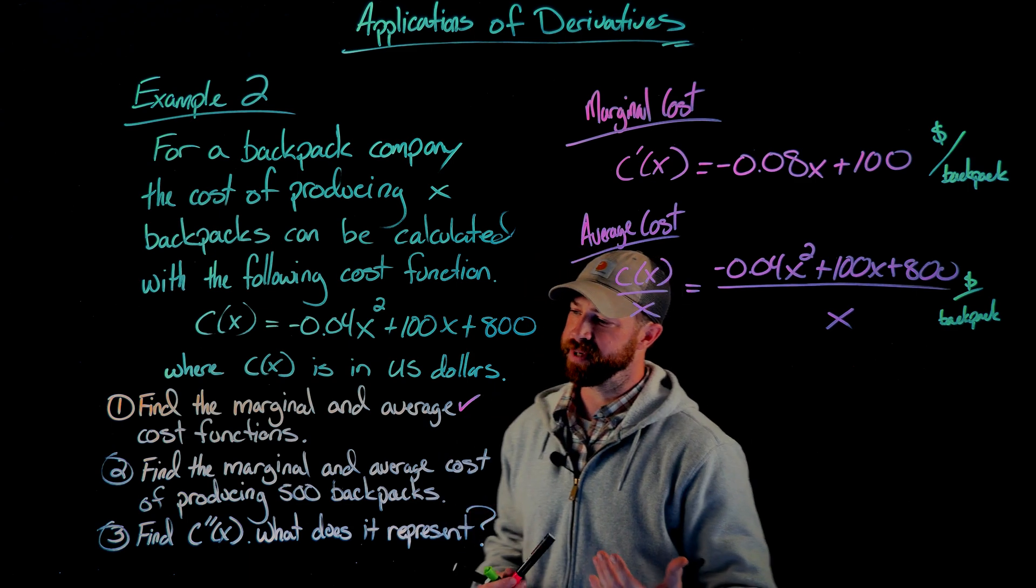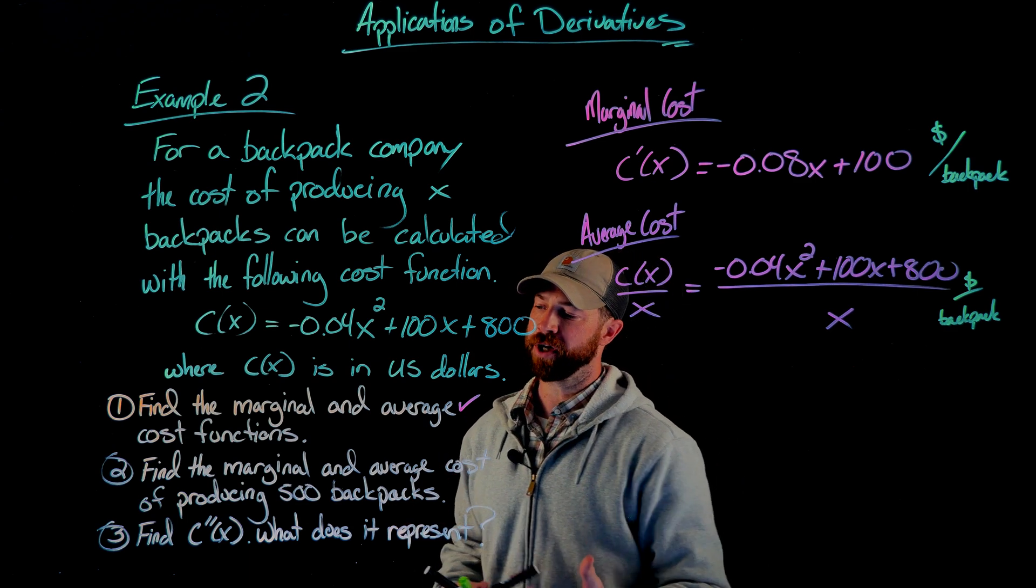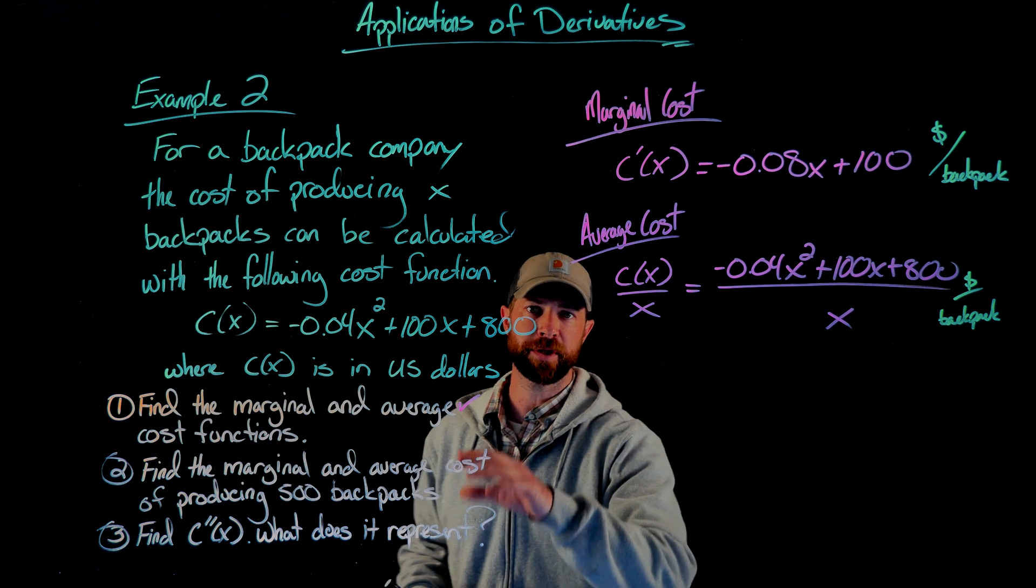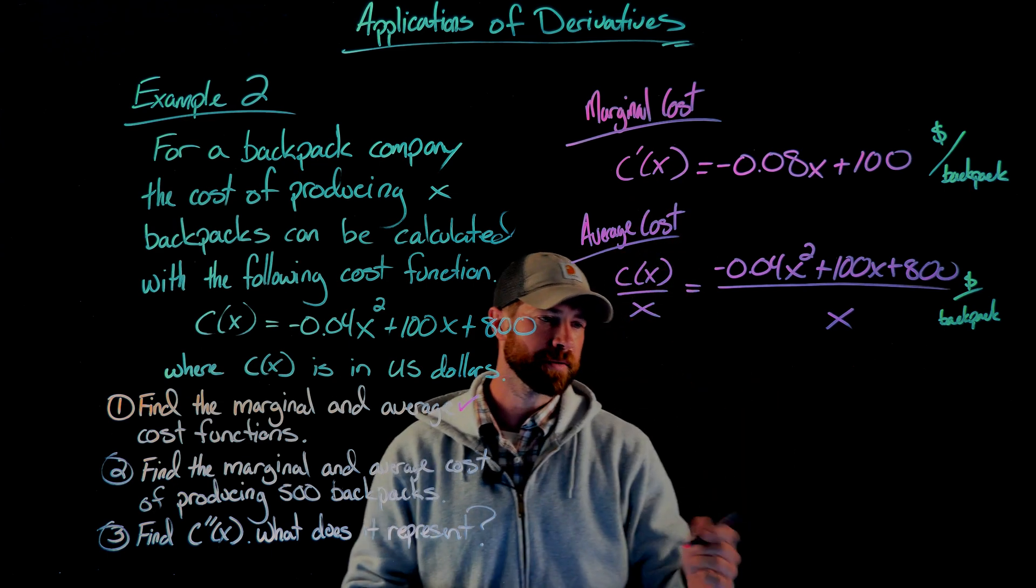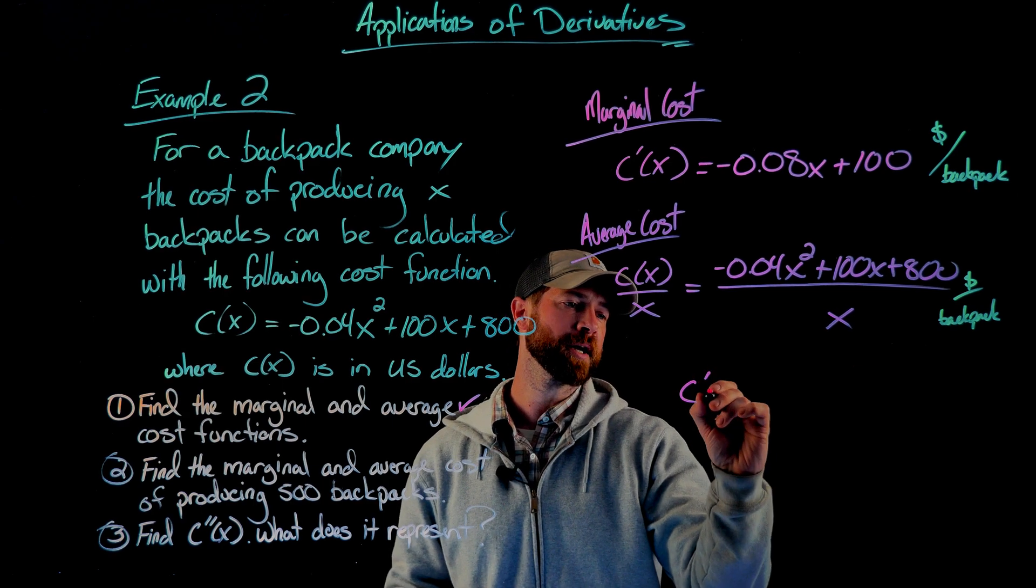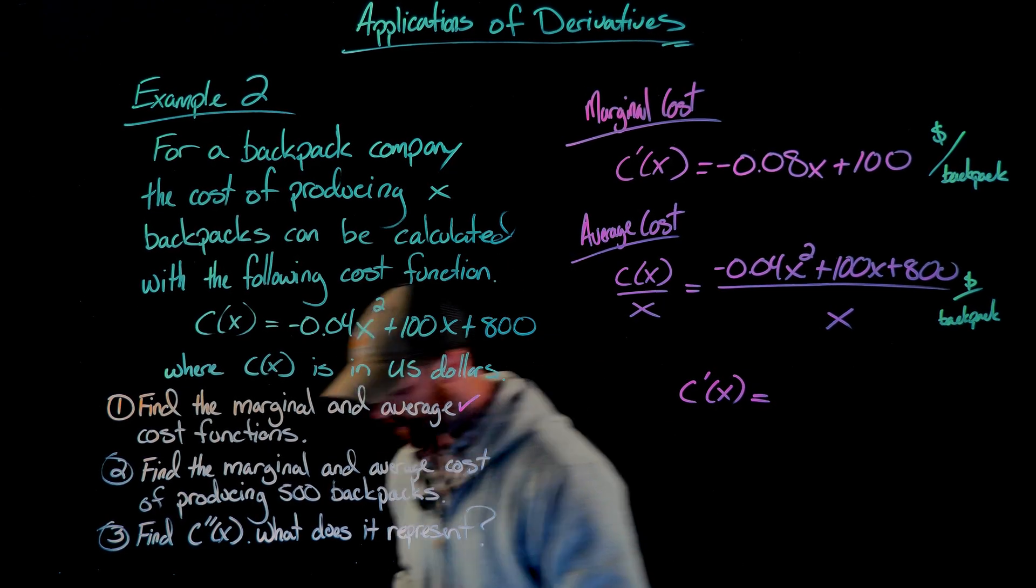So then for number two, we're simply being asked to find the marginal and average cost of producing 500 backpacks. That would just mean we're going to plug in 500 to each of these functions separately. So first for the marginal cost, we take our marginal cost function and plug in 500.